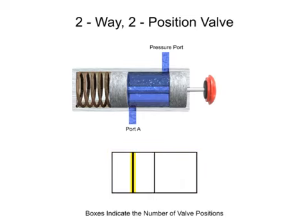Continuous lines are used to indicate fluid flow between ports. For complex valves, the ports may also be labeled. The input port is typically labeled P for pressure. Outlet ports are typically given alpha characters starting with A. Other times, the letter stands for the destination of the fluid — for instance, the letter T would indicate a port connected to a tank. This is a fairly simple valve, so port labels are not required.